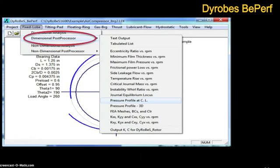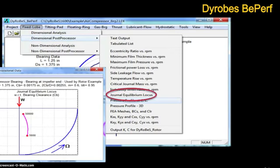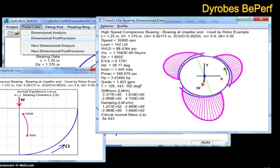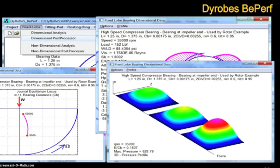Once you have input all your dimensional analysis data, you can run the post-processor, choosing from many options. You can select Journal Equilibrium Locus to see how eccentricity is a function of RPM. To understand how pressure is generated in a bearing, you can also look at film thickness, stiffness, and damping. Or you can look at a 3D pressure profile.